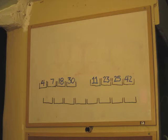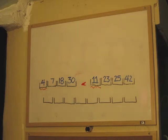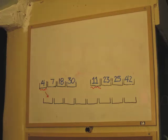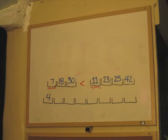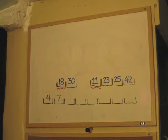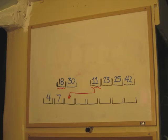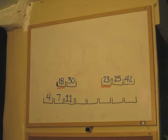Now we put these two lists of four numbers into one list of eight numbers. Again, we compare the first number in one list to the first number in the list next to it. Here we compare 4 and 11. 4 is less than 11, so 4 goes in the first spot of the list of eight numbers. Now we compare 7 and 11. 7 is less than 11, so it will go into the second spot in the list of eight numbers. Then we compare 18 and 11. 18 is greater than 11, so 11 will go into the third spot in the large list of eight numbers. Now we compare 18 and 23. 18 is less than 23, so 18 will take the fourth spot in this list.